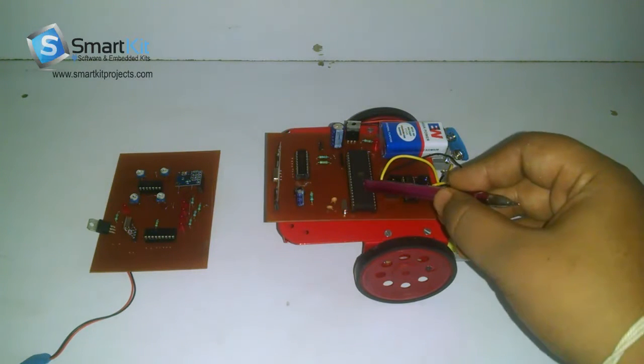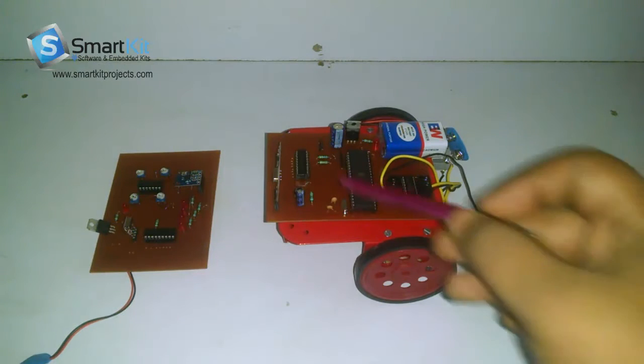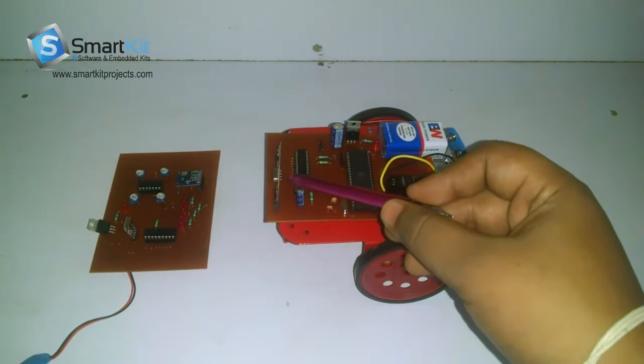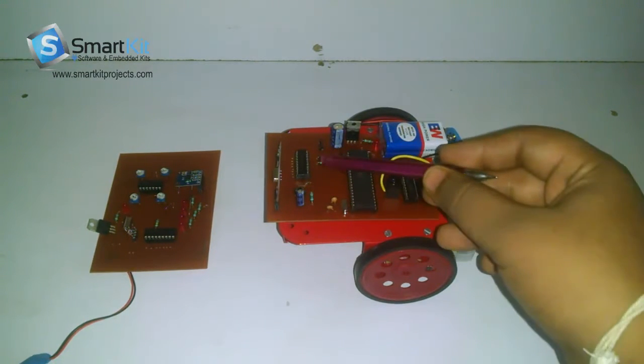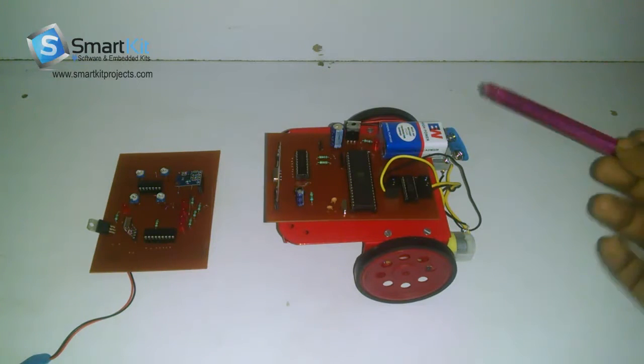this is the 8051 microcontroller over here, this is the car chassis, this is the RF receiver over here and this is the 9V battery, this is the BO motor over here and as you can see,